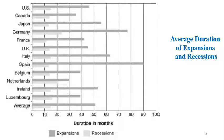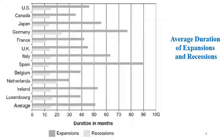France shows expansion extending to more than 62 months on average while recession is about 15 months. Spain is an extraordinary case where expansion can reach 90 months while recession is less than 30 months. Belgium, Netherlands, Ireland, and Luxembourg are between 30 and 53 months for expansion and between 15 and 20 months for recession. The overall average for all countries is about 51 months for expansion and about 15 months for recession.